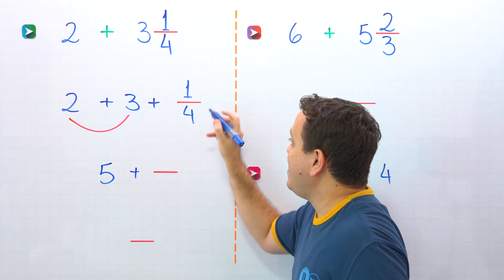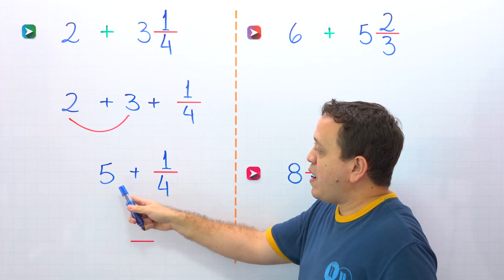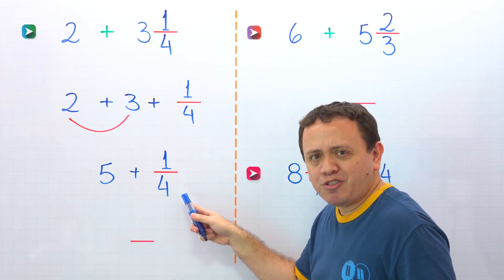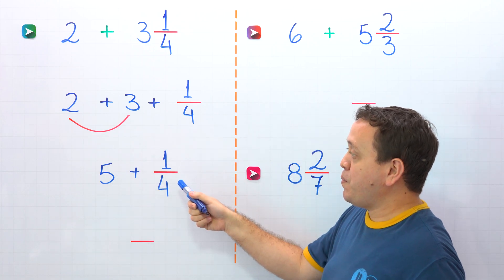Then, the plus sign, and here the fraction 1 fourth. In this line, we have the sum of a whole number and a proper fraction. Hold on! That is the definition of a mixed number, the sum of a whole number and a proper fraction.